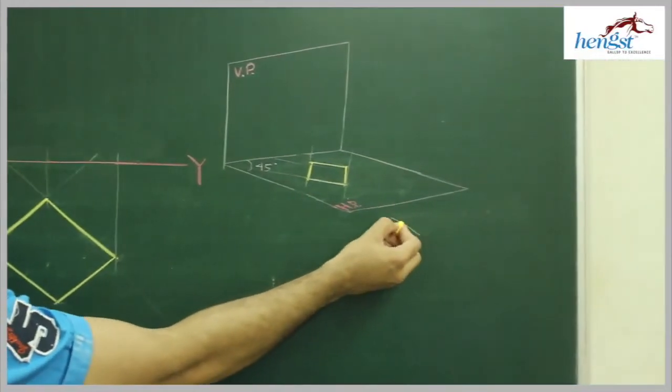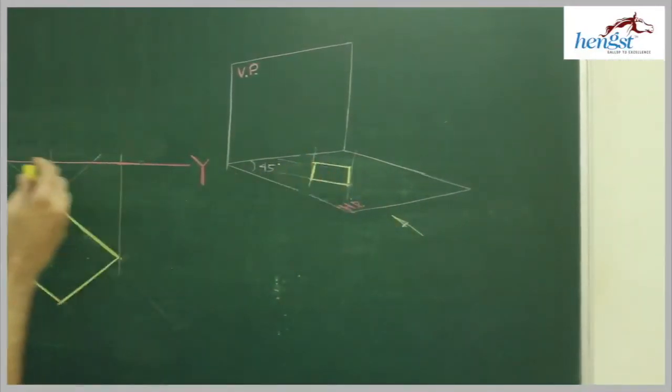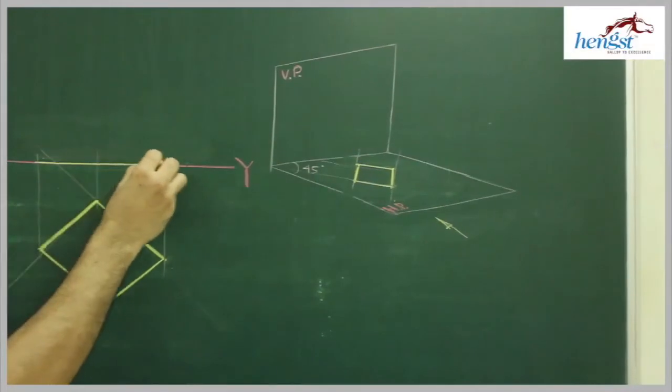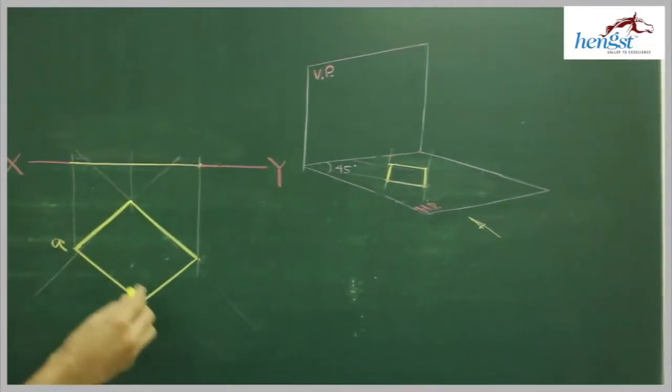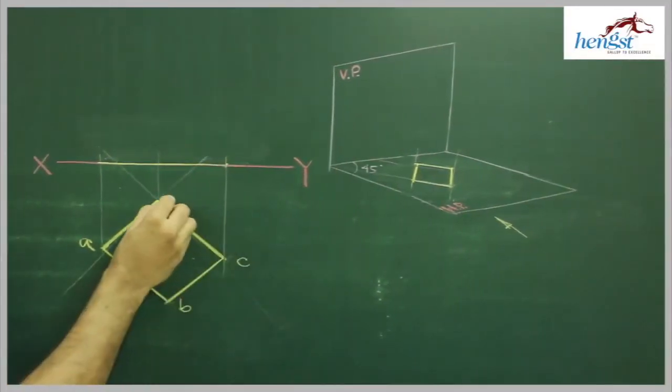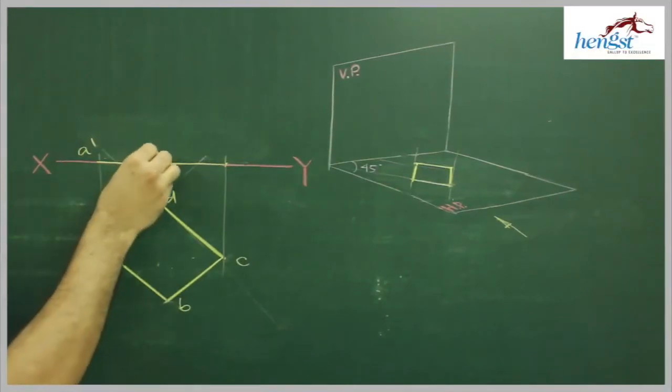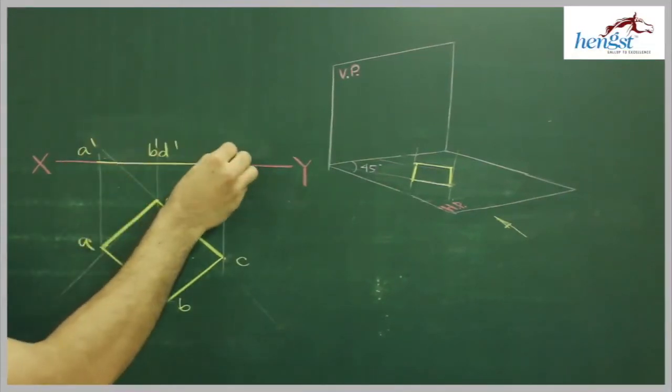When you see from here, you will see a straight line. So that would be this. Naming I will do A, B, C, D. This is A dash, D dash, D dash, C dash.